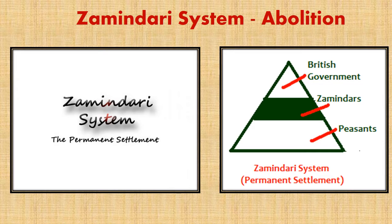Zamindari means a man of the land or landlord. There was sort of a micro-king who ruled their small territory by collecting taxes, running a court to resolve disputes, maintaining a military and building palaces.